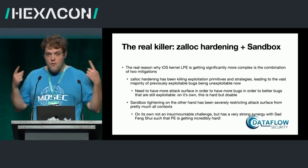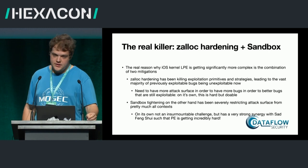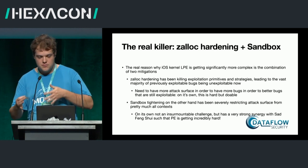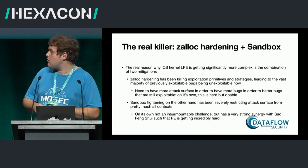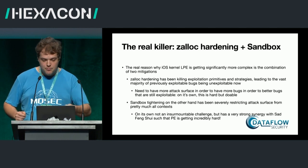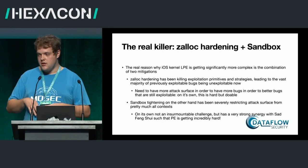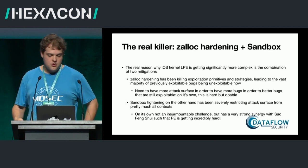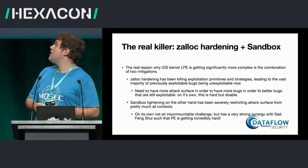The real killer is the combination of two things: Zalloc hardening — kalloc type and bad Feng Shui — combined with sandbox reduction. Zalloc hardening requires you to find more bugs to find the one that's still exploitable, so you need more attack surface, more primitives, crazier primitives. But all that additional code you need to look at is getting killed by sandbox at the same time. On its own, I don't think either of these things would have impacted iOS attackers so much — but together, the combination was really, really huge.